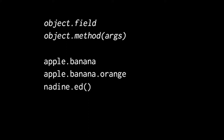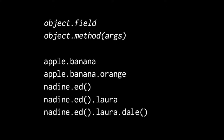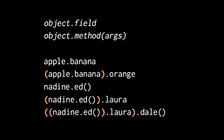nadine.ed() invokes the method ed of the object nadine with an empty argument list. nadine.ed().lara gets the field lara of the object returned by that method. And nadine.ed().lara.dale() invokes the method dale on that field. This chained dot operator syntax can be tricky — here are all the same expressions with explicit parentheses to denote the precedence.